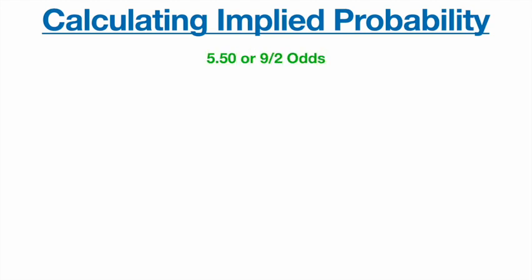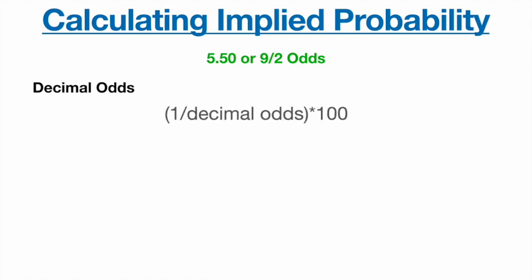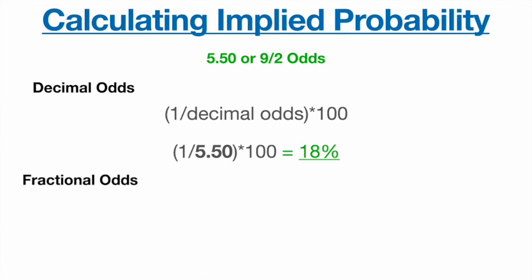If we look at a game where the away team has odds of 5.50 in decimal — I always work in decimals but I'll do fractions as well — in order to calculate the percentage we do: one divided by the decimal odds, times 100. So one divided by 5.50 times 100 gives us 18%. That means the team has an 18% chance of winning according to the odds you're given.